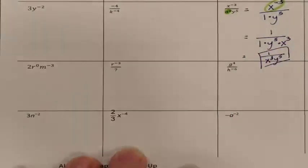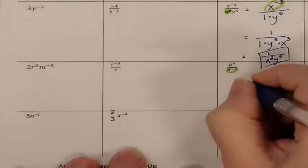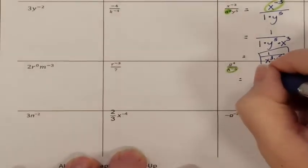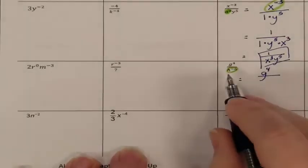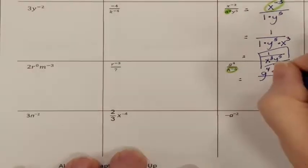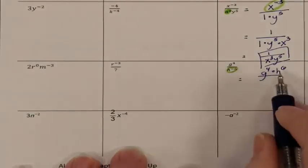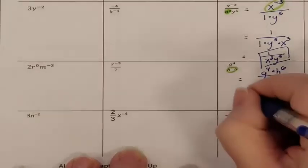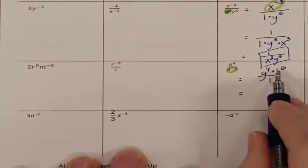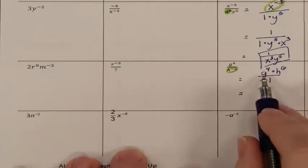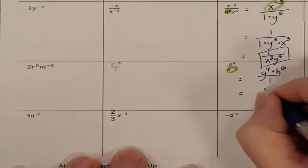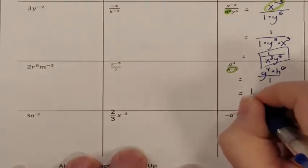Next problem. H is the only thing that has a negative exponent, so H is the only thing that's going to move. Here's my fraction bar. The G stays exactly where it was, because G did not have a negative exponent. H was in the denominator and needs to move to the numerator — when it moves to the numerator, you get a positive exponent. This is all over 1. Anything over 1 is just the numerator, and in alphabetical order: G to the 4th, H to the 6th.